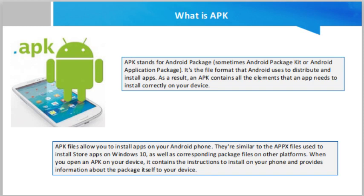When an archive is used to distribute software, it is then called a software package. APKs are a variant of the JAR (Java Archive) file format, since a lot of Android is built in Java. All APKs are ZIP files at their core, but they must contain additional information to properly function as an APK — so all APKs are ZIP files, but not all ZIP files are APKs.